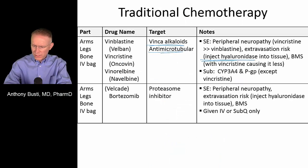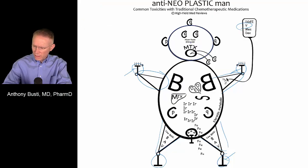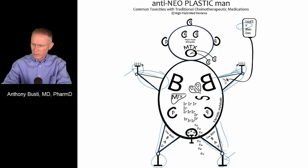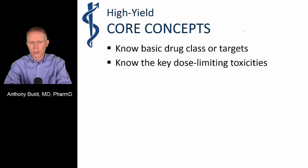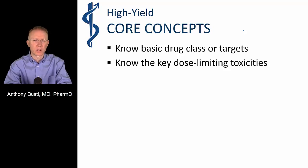Velcade, also known as bortezomib, is a proteasome inhibitor. It causes peripheral neuropathy and extravasation. The V on antineoplastic man corresponds to Velcade. It's important to know both brand and generic names and recognize the drug class or target, because this helps identify how a drug works and often predicts some of its side effects. For example, drugs that affect microtubules tend to have more peripheral neuropathy. Knowing these dose-limiting toxicities and targets is important for board exams as well as clinical practice.